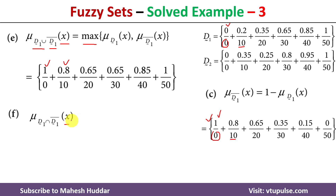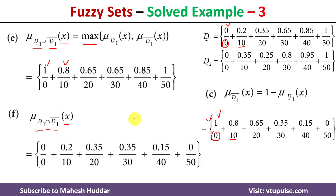For the last question, we calculate the membership value of x in D1 intersection D1 complement. Using the already-calculated complement, the intersection takes the minimum. For element 0, between 0 and 1, the minimum is 0. For element 10, between 0.2 and 0.8, the minimum is 0.2. For element 20, between 0.35 and 0.65, the minimum is 0.35, and similarly for the remaining elements.